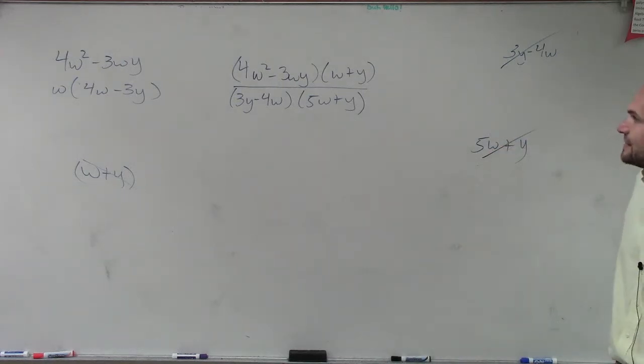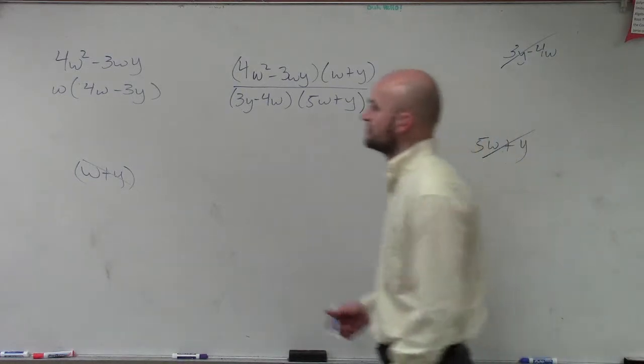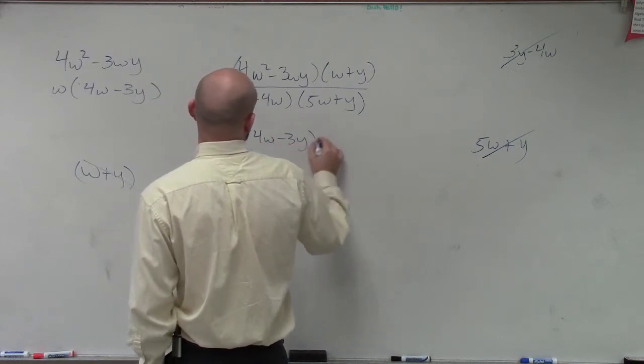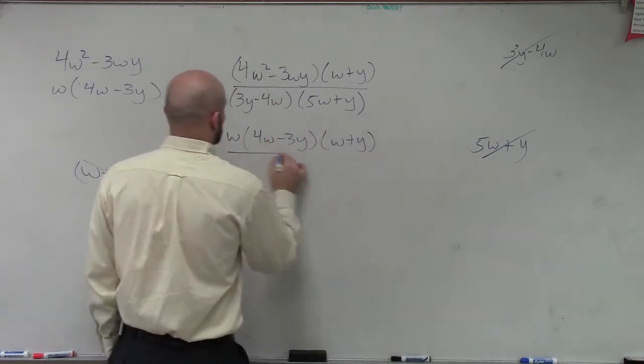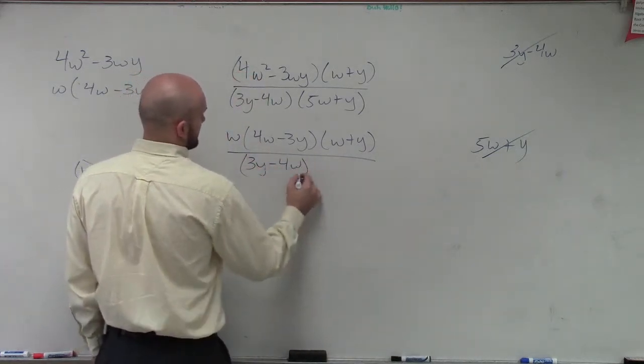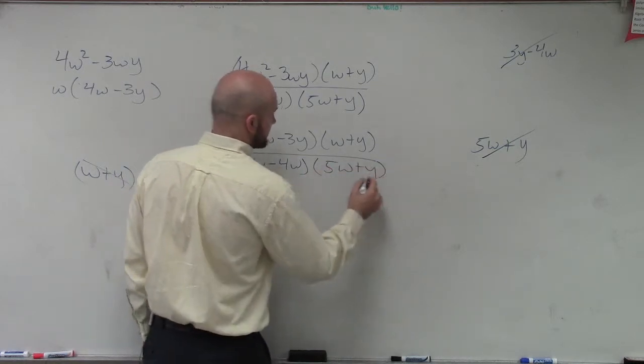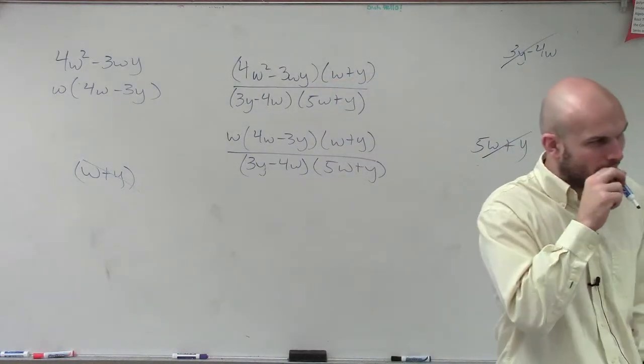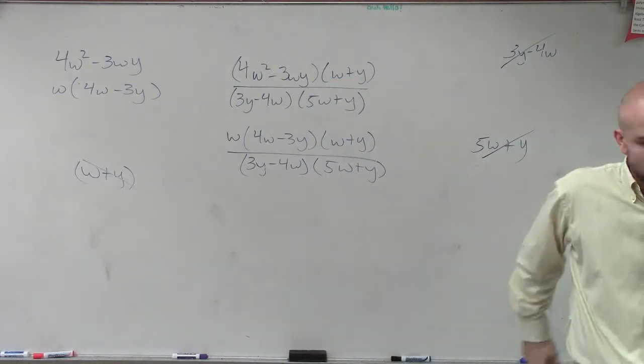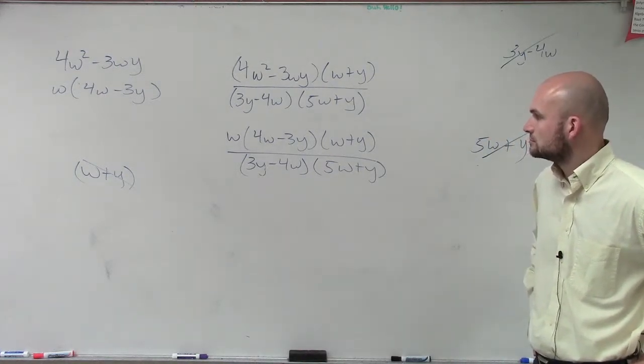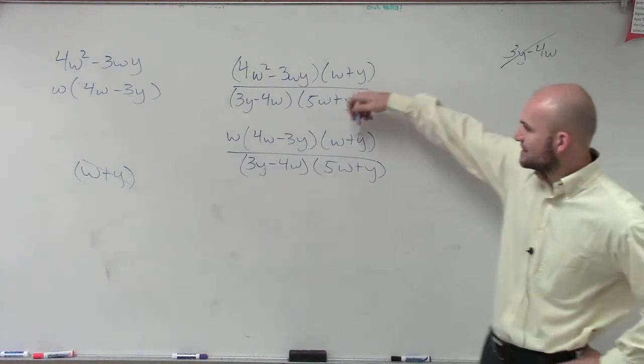So the only thing I have is 4w minus 3y. So let's rewrite this. So I have w times 4w minus 3y times w plus y divided by 3y minus 4w times 5w plus y. So ladies and gentlemen, do we have anything that we can divide out right now? I was just wondering though, is it possible to put the like terms together and like one side and then do it? What do you like terms? Like with the w's and one half of the thing and then the y's and the other half?